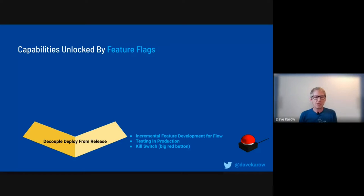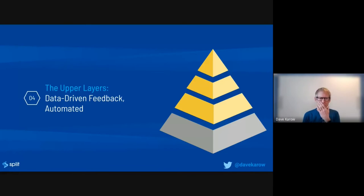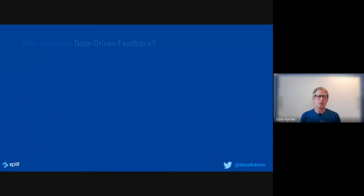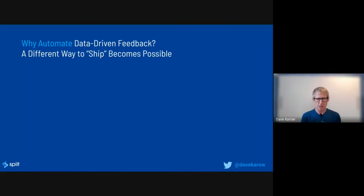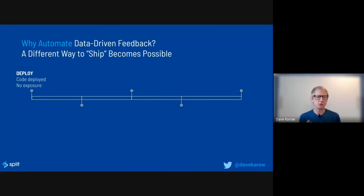Now let's switch gears to what my talk is really about — the upper layers. Those are about data-driven feedback and automating it. The way you can ship using this approach: deploying pushes the code out but doesn't add any exposure to users. It's deployed, it's in place, but it's not being executed. Then you do error mitigation — one last pass to figure out if you missed anything when you built and tested this code that now shows up in production.